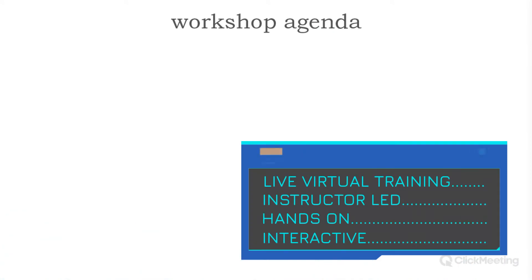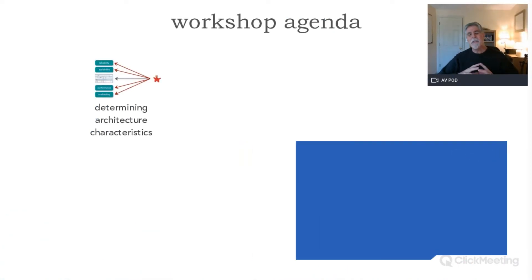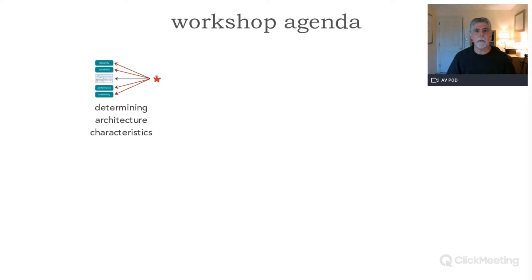Let me show you what we're actually going to be talking about and then we'll start talking about it. When we talk about choosing or determining if we even have the right architecture style in place, everything really starts with the underlying business drivers, which turn into what we call illities. This is what's really going to drive our architecture decisions — should it be microservices, event-driven, space-based, or maybe just a simple layered architecture.